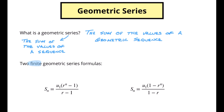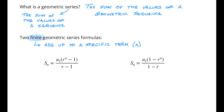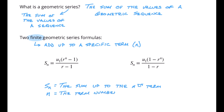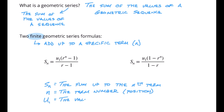A finite geometric series just means that we're going to add up to a specific term, and we call that term n. Even though we've got two different series formulas here, all of the variables represent the same exact thing. S of n is equal to the sum up to the nth term, n is equal to the term number — which we also call the position — u of 1 is equal to the value of the first term, and r is equal to the common ratio. So what's the difference between these two equations?